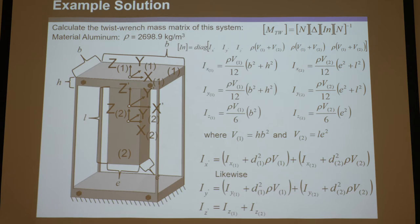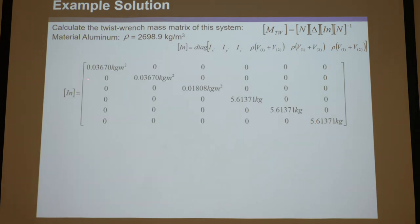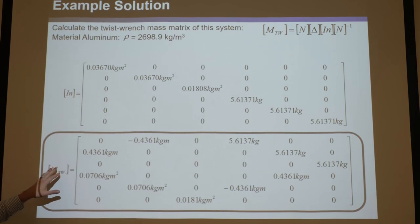That's because you wisely chose your coordinate system at the center of mass aligned with the principal axes of the stage. If you plug in all the values — b, h, e, l, and so on from the initial slide — you get the inertia matrix. Here's what a diagonal matrix looks like — all zero except the diagonal. Make sure you put the units correctly: the mass terms are in kg, and the rotational inertia terms are in kg·m². Then with the n, delta, and n-inverse already found, you plug it all into the equation and you have your mass twist-wrench matrix.